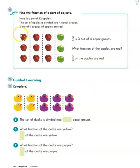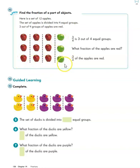Does that make sense? Three, six, nine out of 12 is the same as three groups out of four. So nine is three-fourths of the number 12.